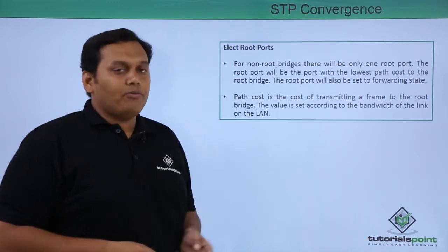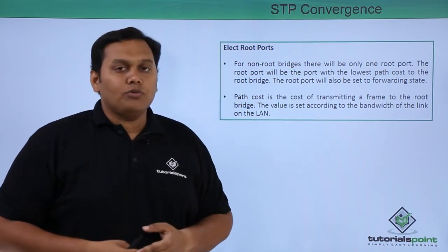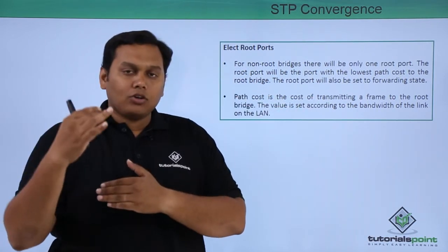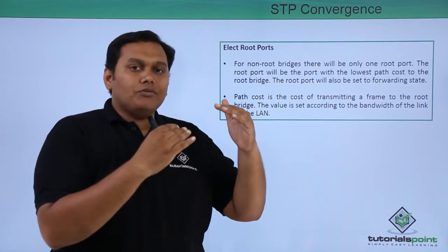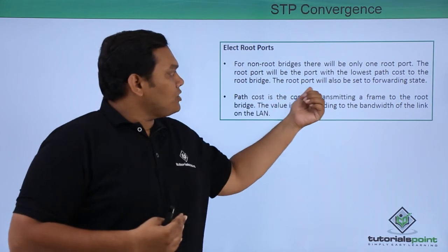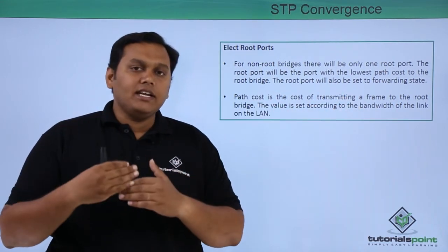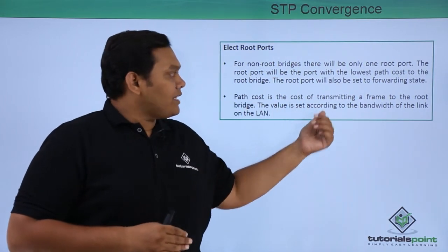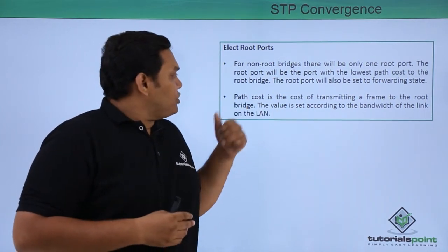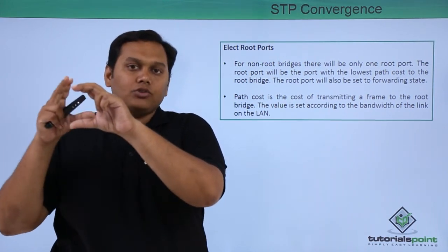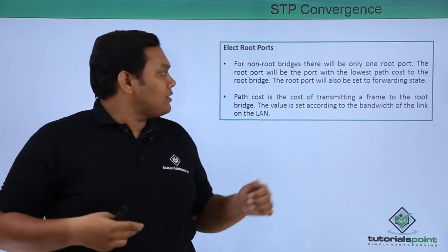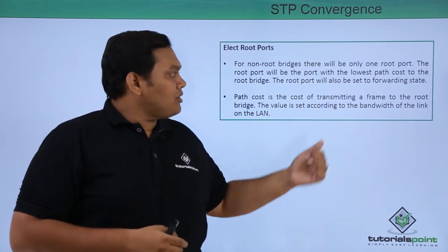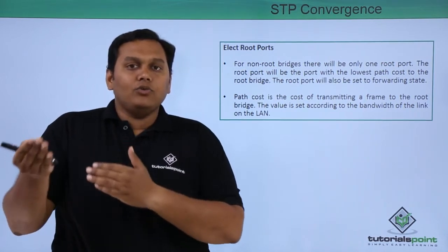The next step is electing root ports. For non-root bridges, there will be only one root port — the port with the lowest path cost to the root bridge. The root port is set to the forwarding state, meaning frames received on that port are forwarded. The path cost represents the cost of transmitting a frame to the root bridge, and its value is set according to the bandwidth of the link.